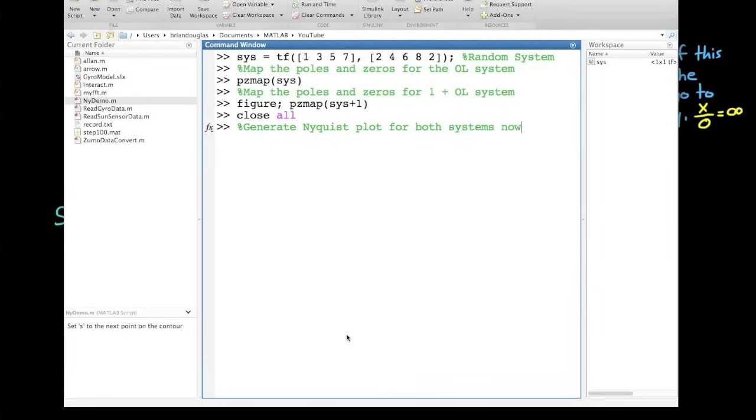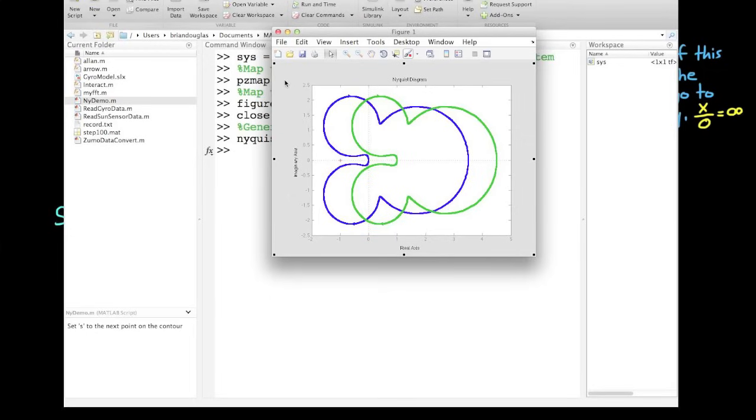However, let's generate the Nyquist plot for G times H and 1 plus G times H. Hey, this kind of looks like Mickey Mouse randomly.